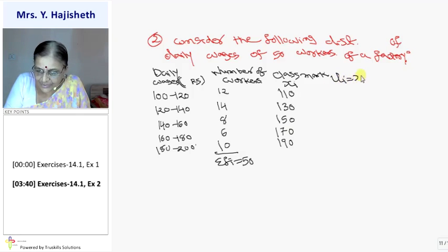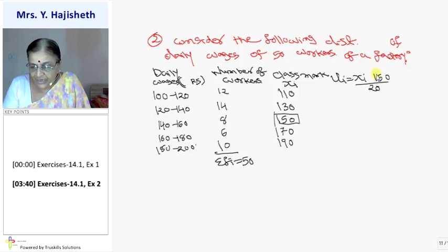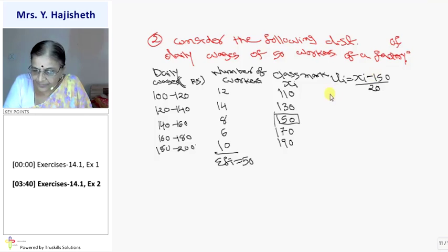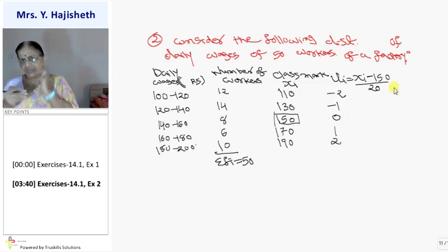I take UI is XI minus A. A mein kis ko leti hun, 150 ko. A will be taken as 150. And class length I know it is of 20. Upper minus lower limit. So UI will be 110 minus 150 minus 40 upon 20. So minus 2. Then minus 1. 110 minus 150 upon 20, minus 2 se shuru. To niche ka minus 1 hi aayega, 0 hi aayega, 1 hi aayega, 2 hi aayega. 1-1 we have to increase.